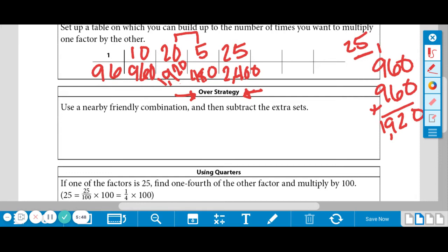So a nearby friendly combination, just a reminder, we had 25 times 96. Hmm. Well, 25 is an okay number. So I'm going to keep that. But I'm going to change that 96 to a 100. That's much friendlier. So the difference here was